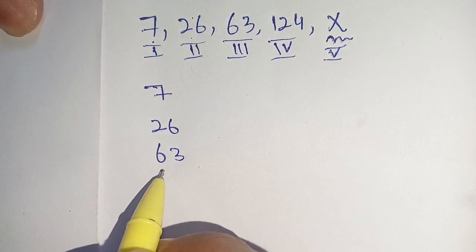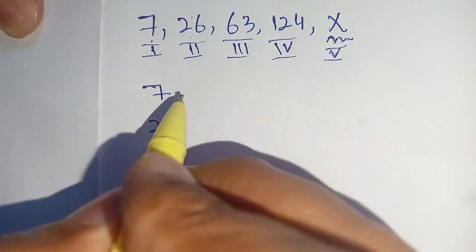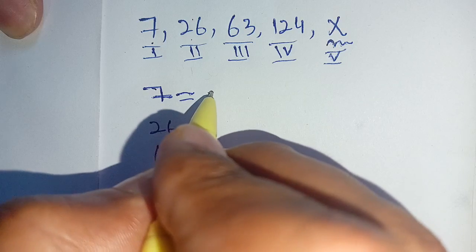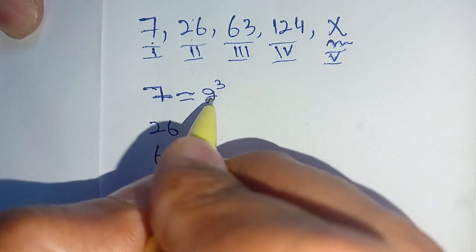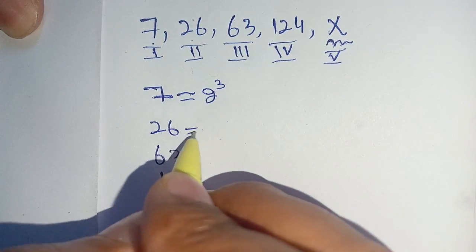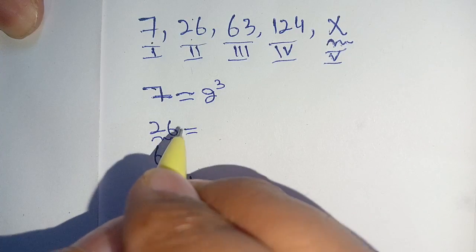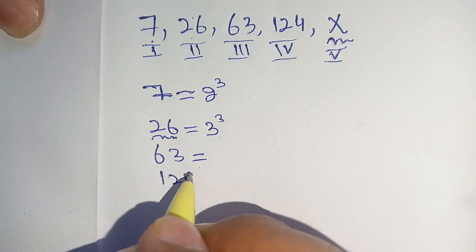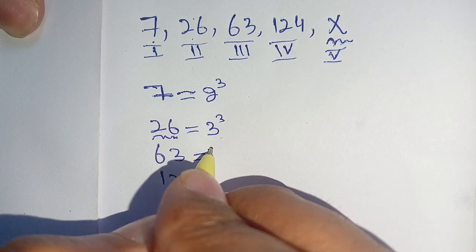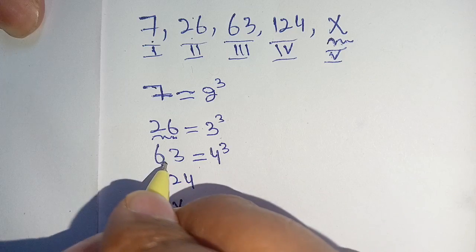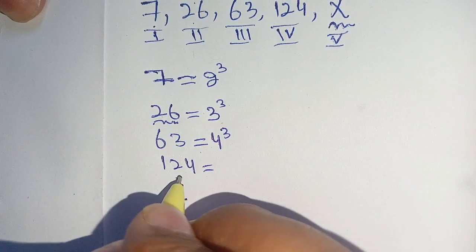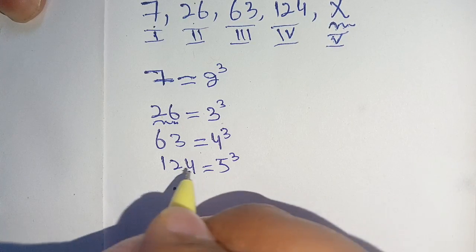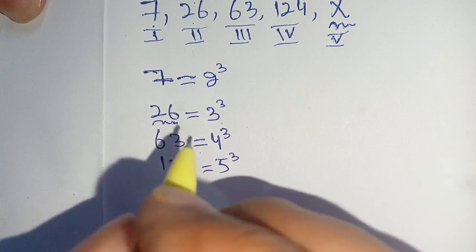We have 7, 26, 63, 124, and we need to find x. Here, 7 is nearest to the cube of 2 — 2 cubed equals 8, and 7 is nearest to 8. Here 26 is nearest to 3 cubed — 3 cubed equals 27, which is nearest to 26. Same case with 63: it is nearest to 4 cubed, which equals 64. And 124 is nearest to 125, which is 5 cubed — 5 cubed equals 125, and 124 is nearest to 125.